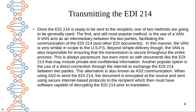The VAN acts as an intermediary between the two parties, facilitating the communication of the EDI 214. The Value-Added Network is similar in scope to the USPS. Beyond simply delivering the document, the VAN is also responsible for ensuring that the transmission is secured throughout the entire process. This is especially important for a document like the EDI 214 that may include private and confidential information.